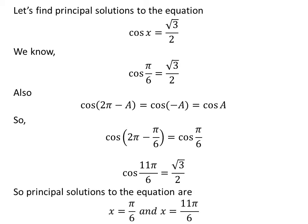So the principal solutions to the equation cosine of x is equal to square root of 3 upon 2 are pi upon 6 and 11 times pi upon 6.